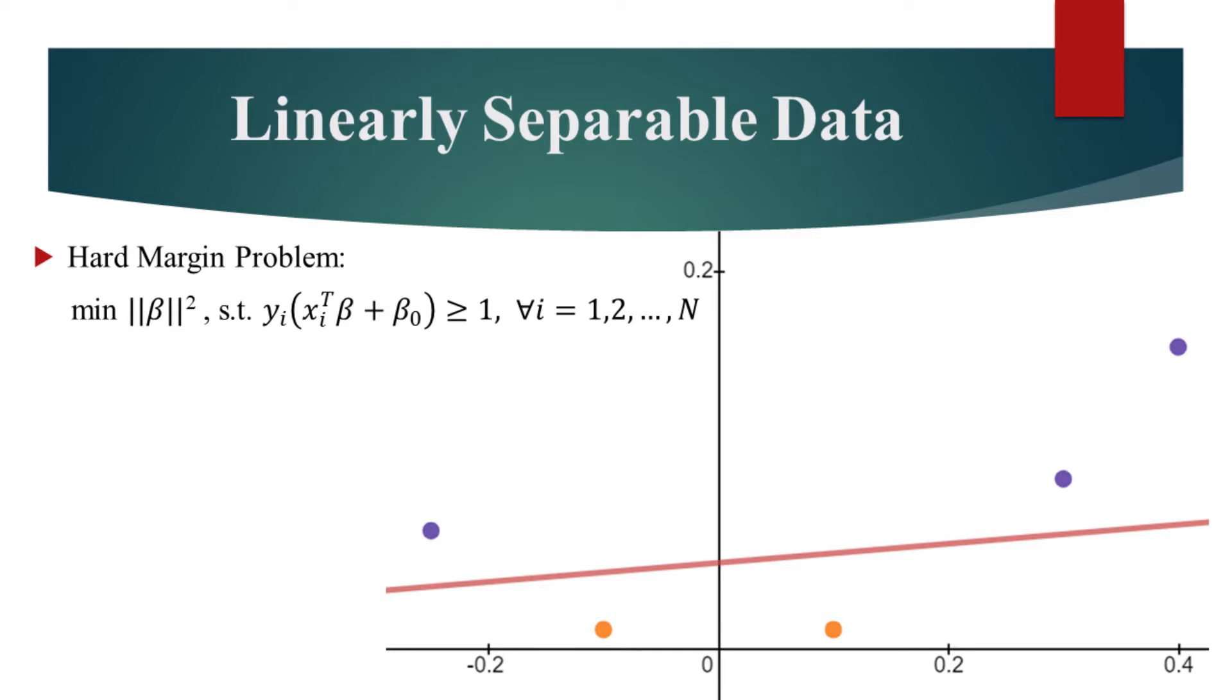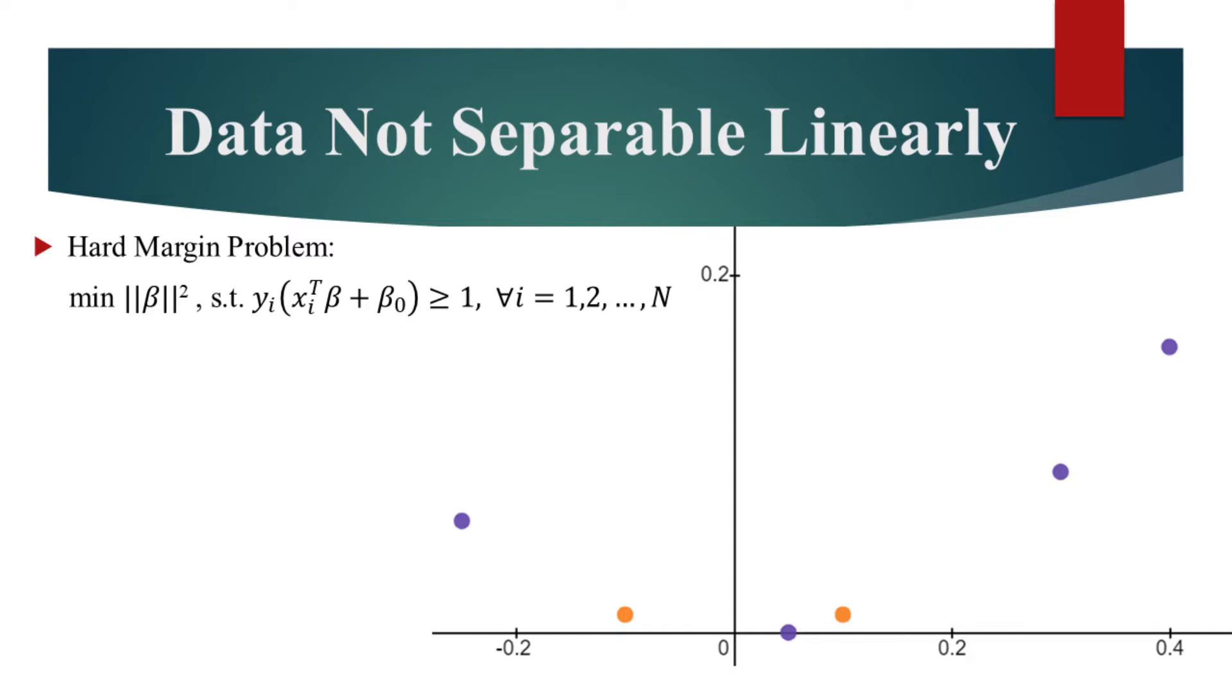However, if we add a violet data point between and under the two orange data points, it will become impossible to perfectly separate the data with a hyperplane.